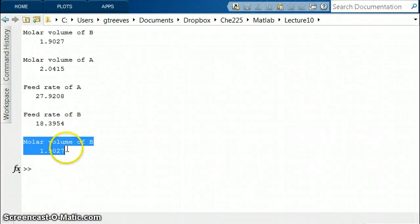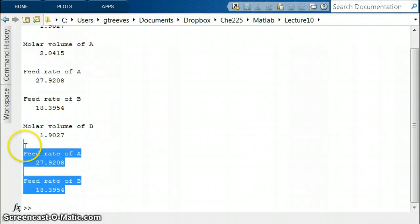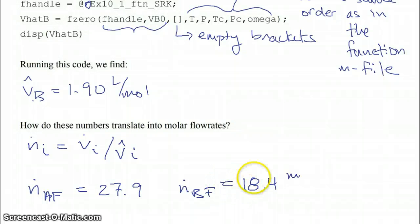Finishing up, if you scroll down, these will be our calculations for the molar flow rate. So if I run that set of code it tells us that our two feed rates in terms of molar flow rates are those two right there. So wrapping up the lecture notes, V̂_B is 1.90 liters per mole and our molar flow rates which would be ṅ_i equals volumetric flow rate divided by molar flow rate for the two species would be 27.9 and 18.4 moles per minute.